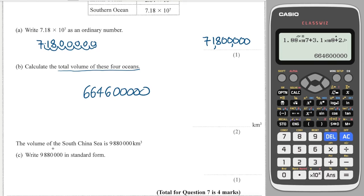It says the volume of South China Sea is this. Write that in standard form. Again, I want it between 1 and 10, so I do 9.88. And I have to move that 1, 2, 3, 4, 5, 6 spaces, so it's times 10 to the 6.